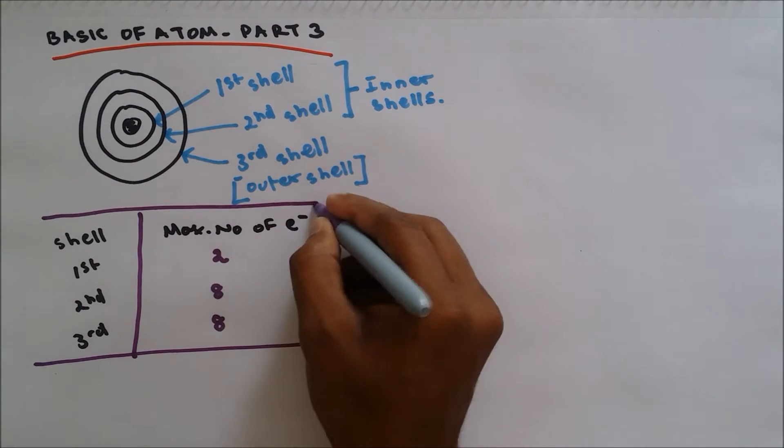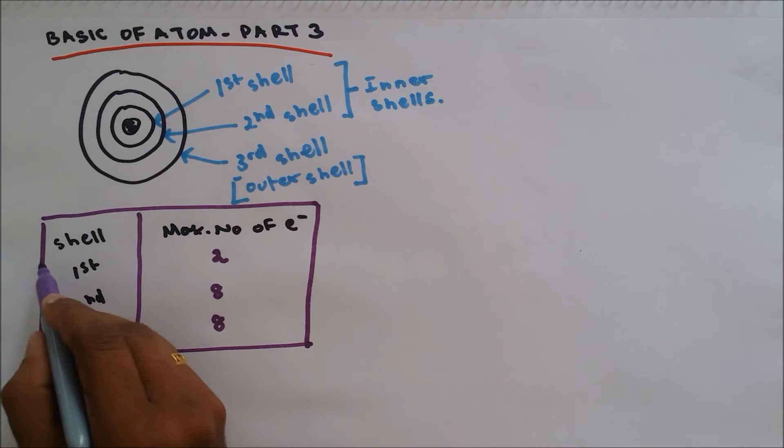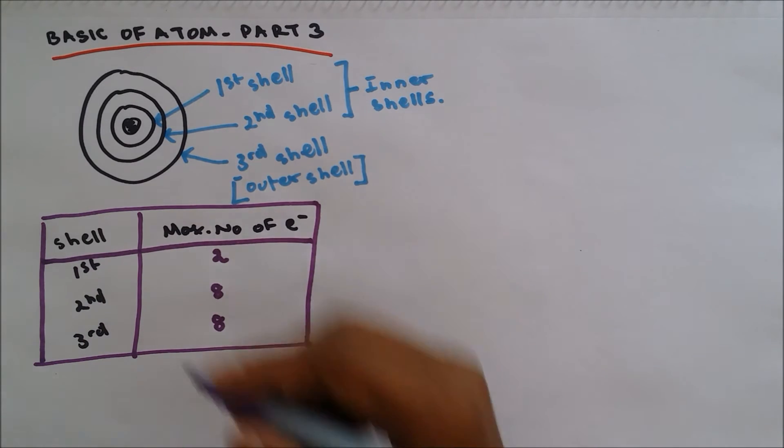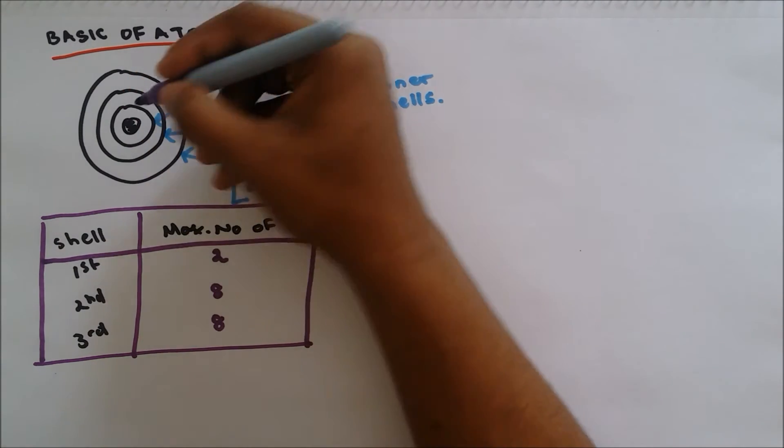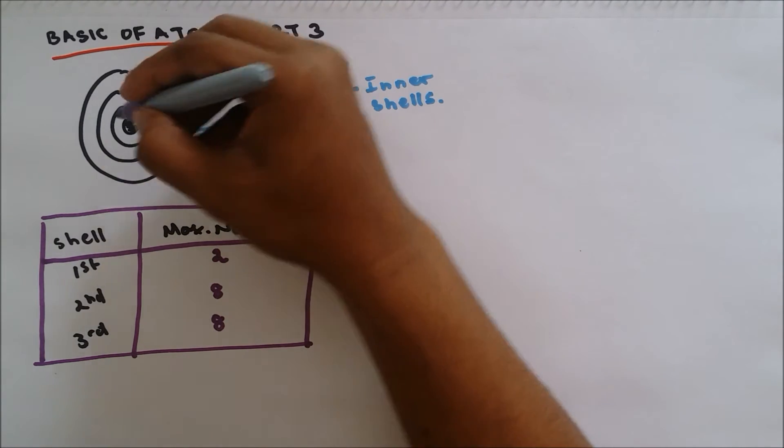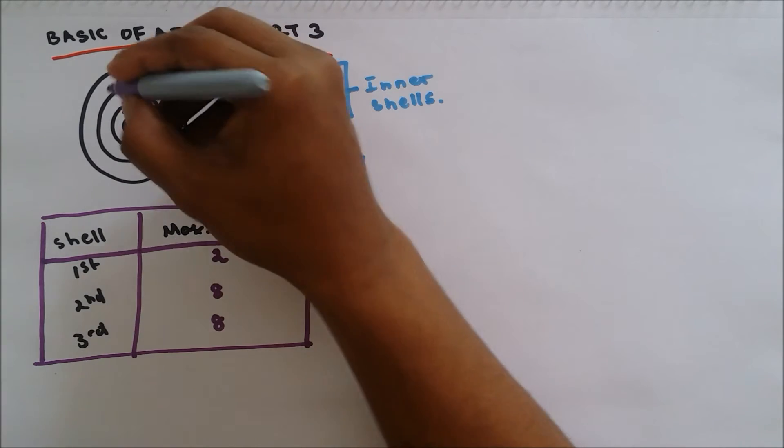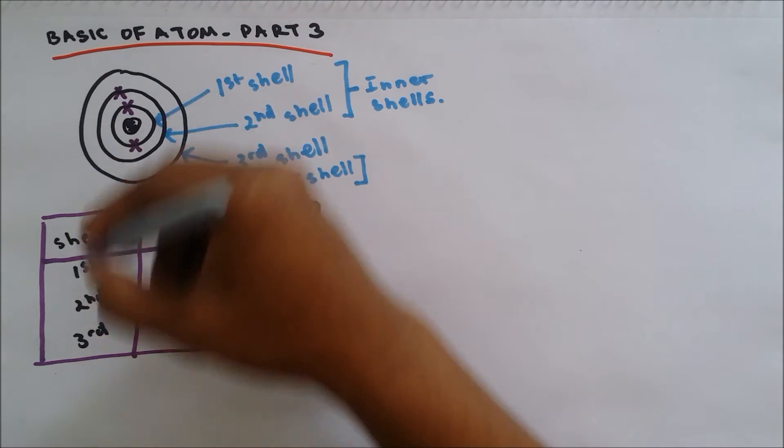So you need to learn this—it's very important. Two, eight, eight is very important. So if you go to this diagram, on the first shell which is this, we have two electrons, so we put two cross representing two electrons.